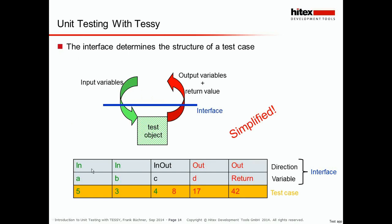An interface consists of the input variables and the output variables to your test object. In a simplified case, the first two lines of this table specify a very simple interface: variable B is an input variable, variable C is both input and output — think of a global variable which is incremented by your test object, first read then written back. Variable D is an output, and the return value is always output if it exists. Usually the interface also includes data types of the variables and so on.